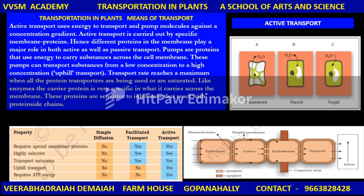Transportation consists of active transport and passive transport. Pumps are proteins that use energy to carry substances across the cell membrane and can transport substances from a low concentration to a high concentration — this is called uphill transport. Transport rate reaches a maximum when all protein transporters are being used or saturated. Like enzymes, the carrier protein is very specific in what it carries across the membrane, and these proteins are sensitive to inhibitors that react with protein side chains.